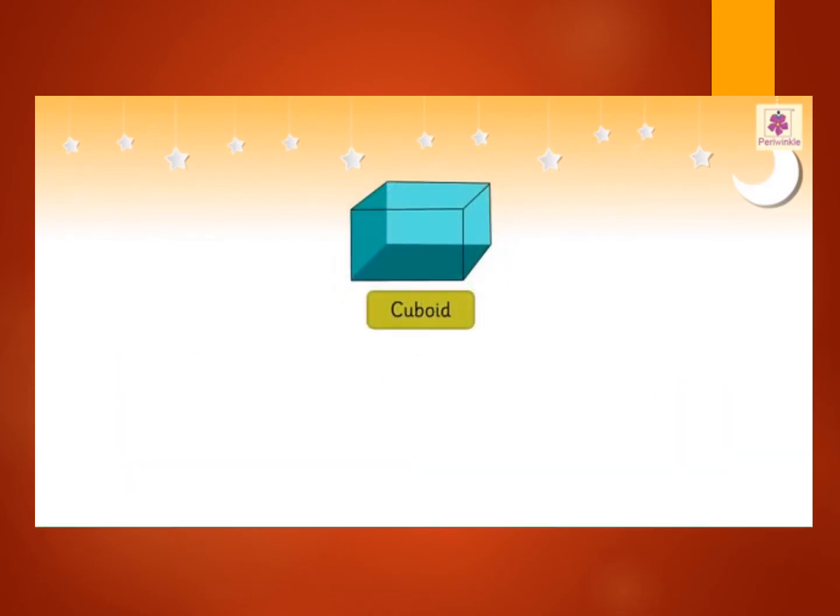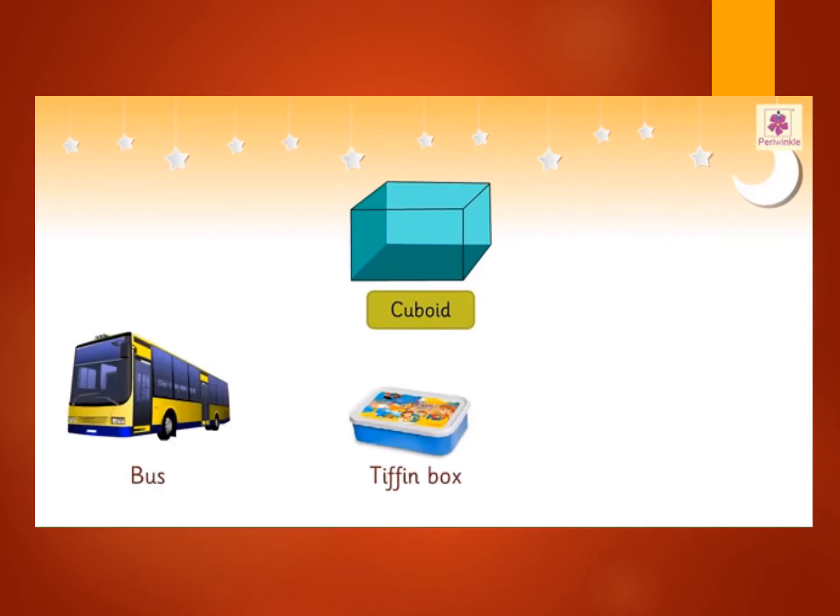This is a cuboid. A bus, a tiffin box, a fish tank are all examples of a cuboid.